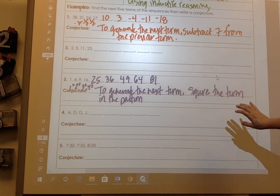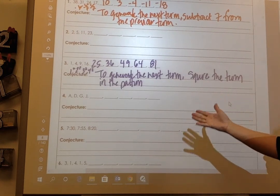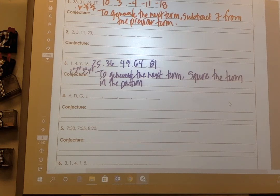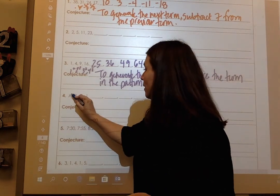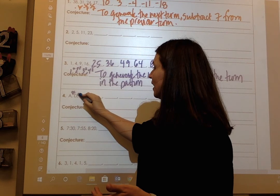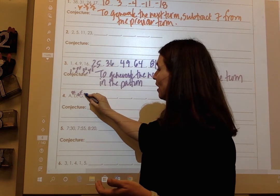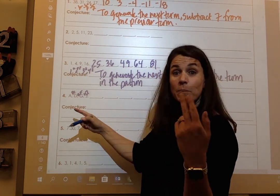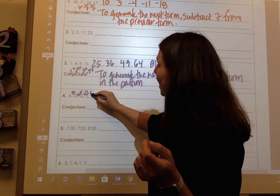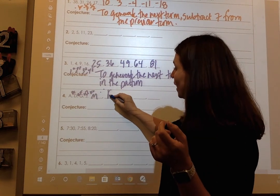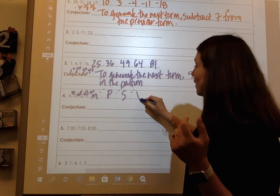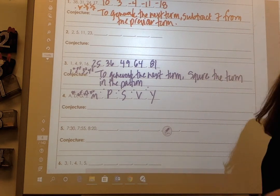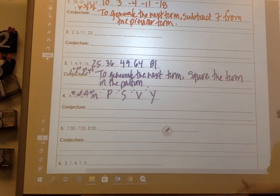Look at number 4. We have A, D, G, J. What in the world could that be? So I would start with the alphabet: A, then B, C, D, E, F, G, H, I, J. So it's skipping two letters. J, K, L, M, N, O, P, Q, R, S, T, U, V, W, X, Y. So that's how I'm going to get that pattern.